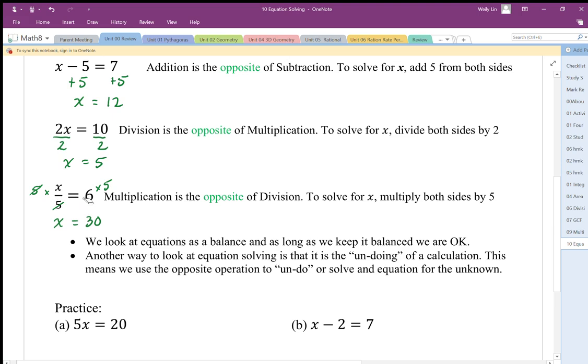The idea is we have a balance. We have to keep it balanced. What we do to one side, we have to do to the other. We can undo the calculation to get x by itself by using opposites.